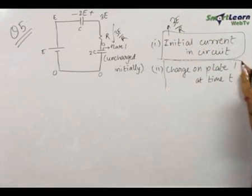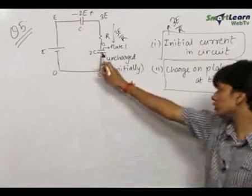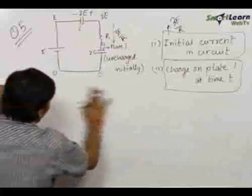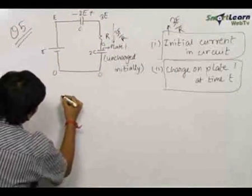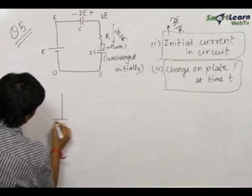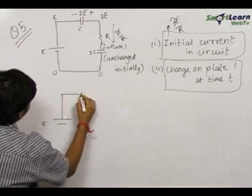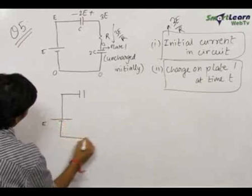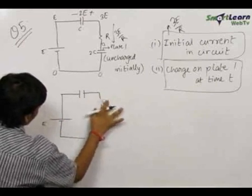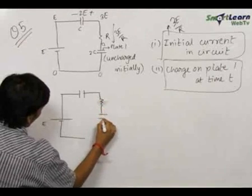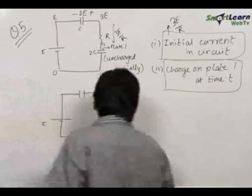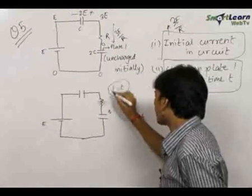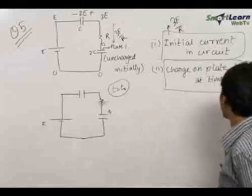The second part is a really important part. We need to find out the charge on this plate of capacitor 2C at any general time t. This is the general method which we use most of the time. We have the battery with emf E, the capacitor with capacitance C, the resistance, and the capacitor of capacitance 2C. Let charge q develop on this plate of the capacitor at any general time t naught.